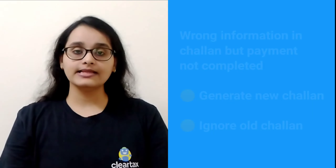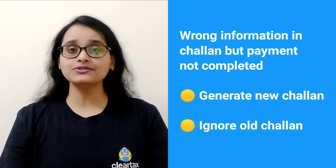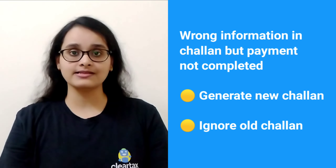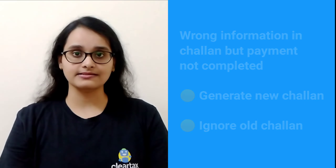Now, suppose any details in the challan are incorrect and you haven't made the payment yet — you must freshly generate a new challan with correct particulars. You don't have to take action on the old challan because it automatically expires after 15 days. To track the payment status, the CPIN or Common Portal Identification Number must be used.